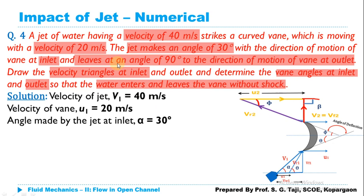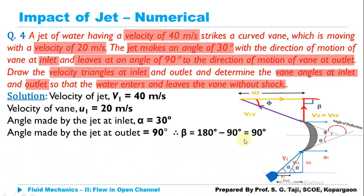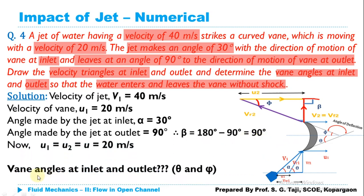At the outlet, the direction of motion of the vane is horizontal. The jet leaves at 90° to this direction, meaning beta = 90°, since beta is the angle made by the absolute velocity at outlet. Alternatively, 180° − 90° = 90°, confirming beta = 90°. We are asked to find vane angles theta and phi.